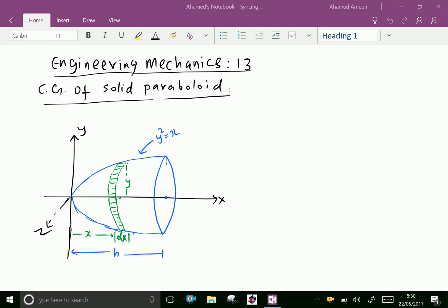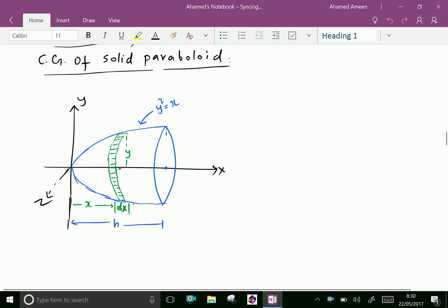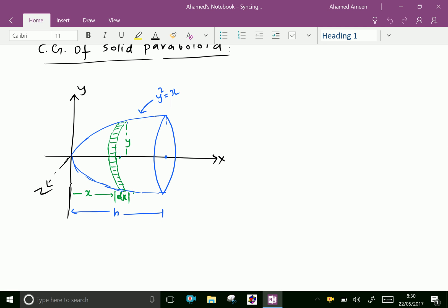Welcome to aminacademy.com. In engineering mechanics, let us find the CG of a solid paraboloid. Look at this picture. It is a solid paraboloid having the x-axis as its axis.